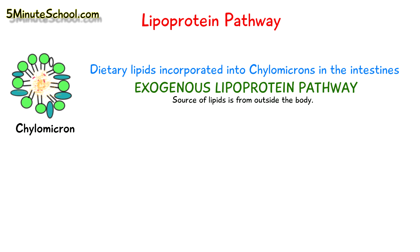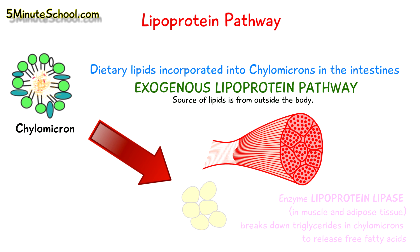The triglycerides, which is what the fats are broken down into, are carried within the chylomicrons to the muscle and adipose tissue. There, they are metabolized via the enzyme lipoprotein lipase to release free fatty acids, which are free to be metabolized by the muscle and adipose tissue. We then have chylomicron remnants which are formed.